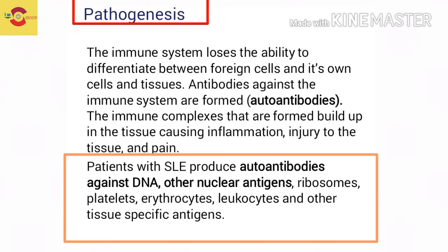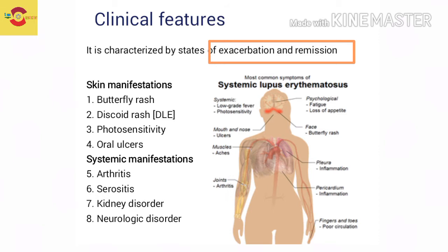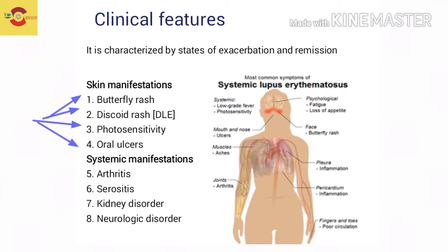The clinical features are characterized by states of exacerbation and remission. Under skin manifestations, there are four key points: butterfly rash, discoid rash (especially seen in discoid lupus erythematosus), photosensitivity, and oral ulcers. Under systemic manifestations, four main points include arthritis, serositis (inflammation of pericardium and pleura), kidney disorder, and neurological disorder.